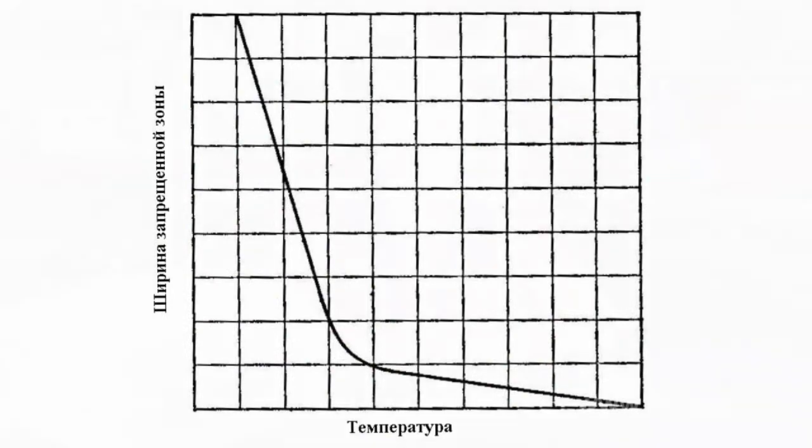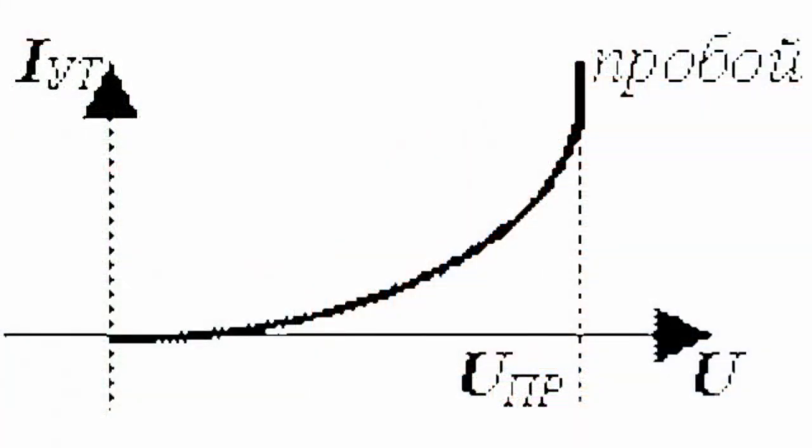Tunnel breakdown alone is possible only under high impurity density, and breakdown voltage is 0.5 volts. It's also characterized with sharp increase of backward current and virtually unchanged backward voltage. Such a breakdown is reversible and unlike heat breakdown.